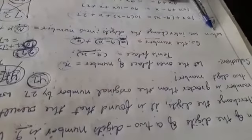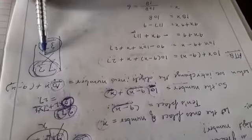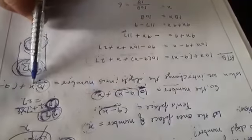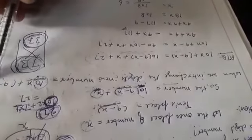Now, when we interchange the digits, we shift the unit digit to the tens place and the tens digit to the unit place. For example, take 73 — after interchanging, 7 goes to unit place and 3 goes to tens place, giving us 37. So the tens digit wali digit ko unit place mein likhenge, unit wali digit ko tens place mein likhenge.